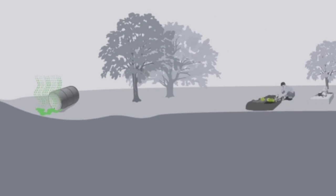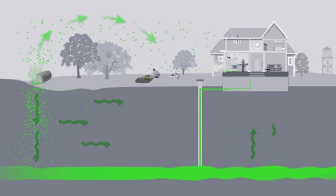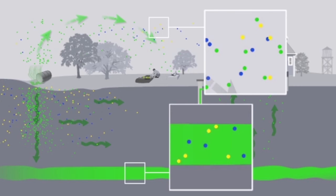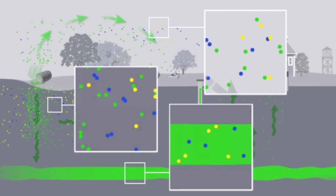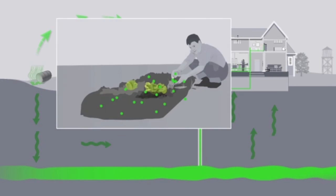The next part looks at how the chemical might move or change in the environment. Some chemicals break down when exposed to air, water, or microorganisms such as bacteria. Air, soil, and water are the major elements that can move or change a chemical. Sometimes the chemical can get into plants and animals that people eat, so we also consider how eating contaminated plants and animals could affect a person's health.